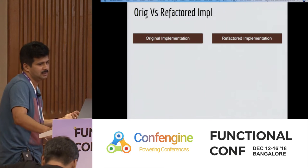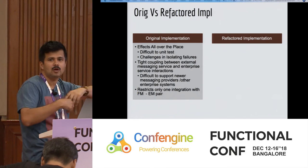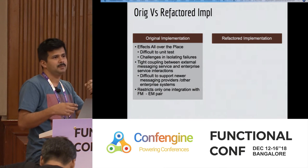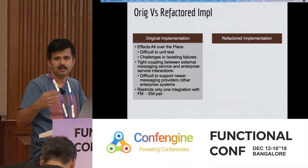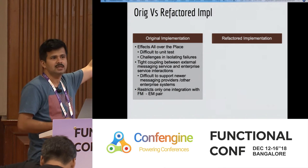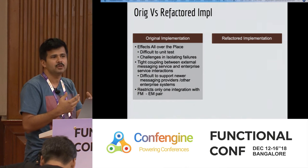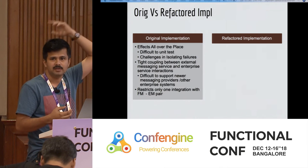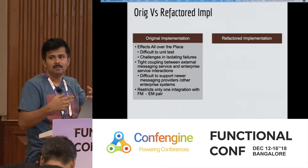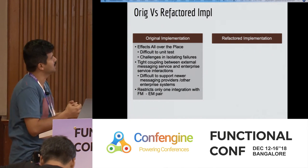So comparing original to refactored: in the original implementation there was one module where all the methods were doing effects all over the place — send message, receive message, add user for group chat. There was tight coupling between the external messaging service and enterprise interaction because everything was done in one place with no decoupling. It was also difficult to support a new service — like adding WhatsApp or Facebook — you'd need to tear things apart. Same if your enterprise messaging changes. It was restricted to one FM-EM pair, which worked fine for that use case.